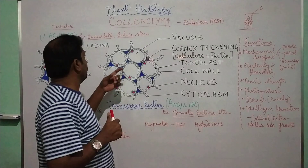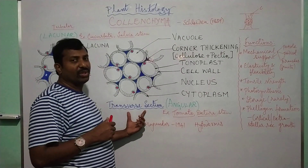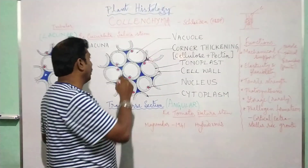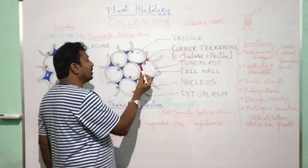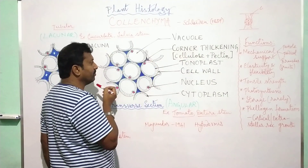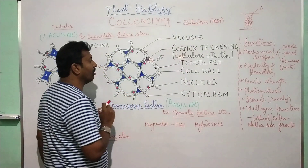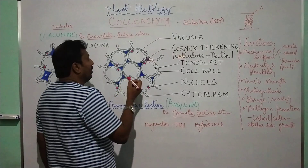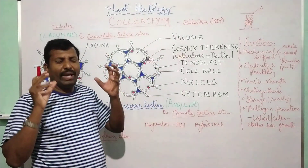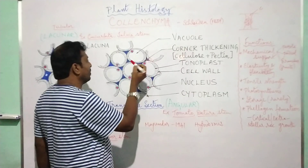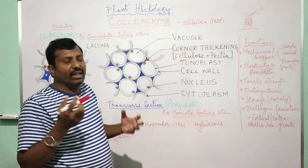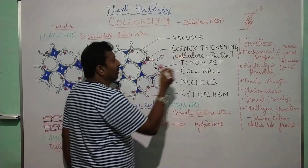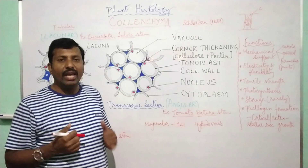Next we come to the structure of Collenchyma. In the transverse section, Collenchyma appears with cells oval or spherical in outline, and it contains living protoplasm — that is a large vacuole in the center with the tonoplast membrane of the vacuole, and the nucleus and cytoplasm are present on the peripheral zone. It is exactly similar to parenchyma tissue except for one change: in parenchyma, intercellular spaces are empty and without any filling, but here the intercellular spaces are filled with pectin, cellulose, and sometimes hemicellulose.